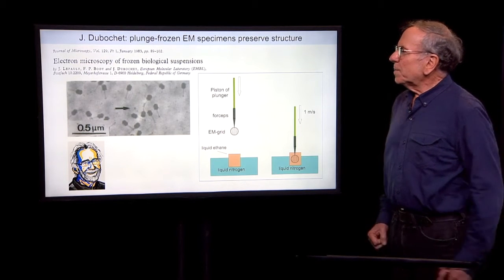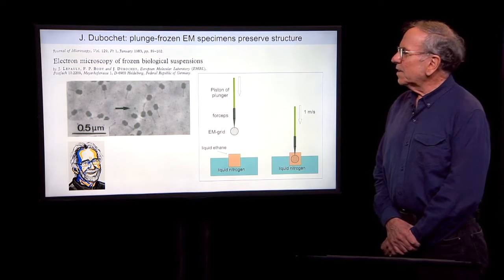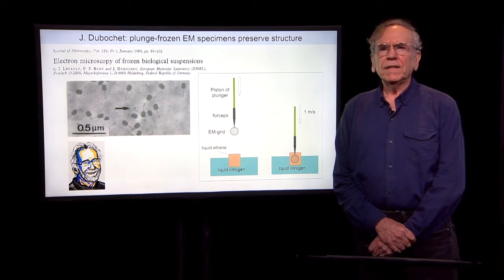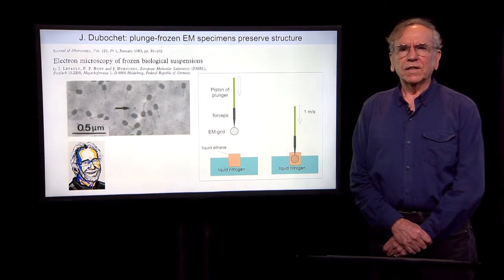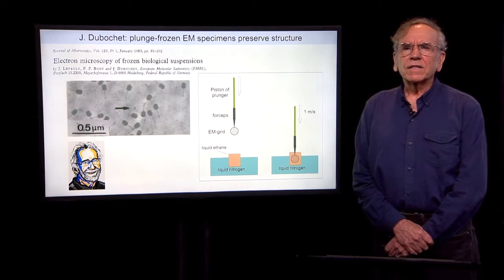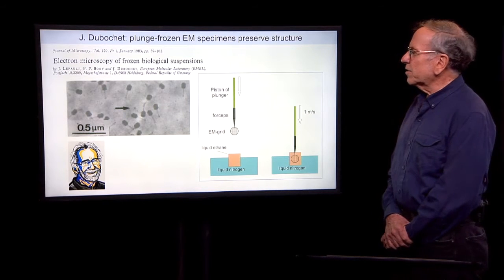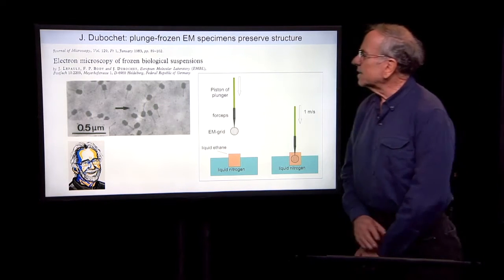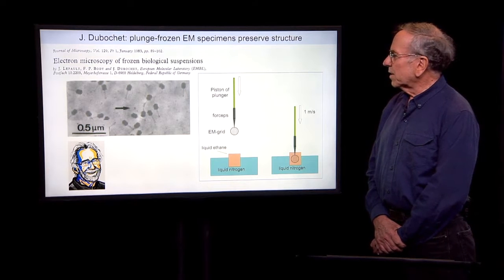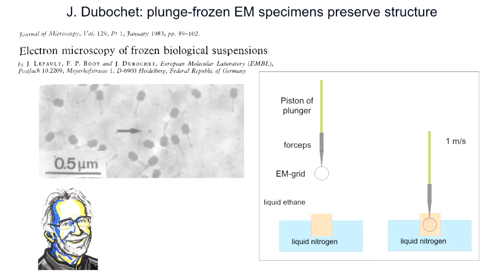Jacques Dubochet, one of those three Nobel Prize winners, discovered that it is possible to rapidly freeze biological specimens on an electron microscope grid and still preserve biological structures — for example, bacteriophage virus particles. The idea is to freeze your aqueous solution surrounding your biological particles very rapidly in a very good cryogen, liquid ethane. This rapid freezing rate prevents water from forming ice crystals.